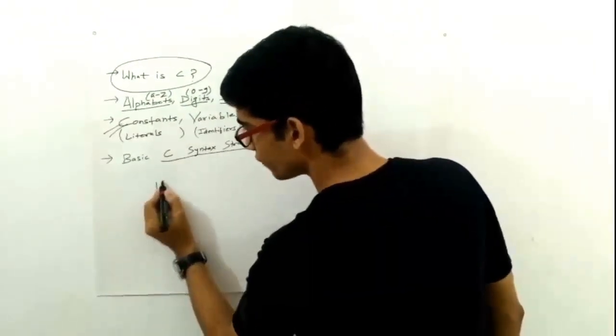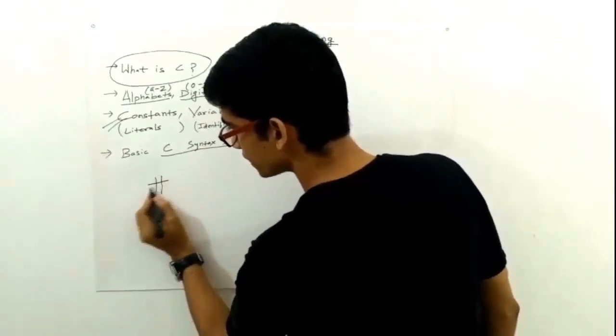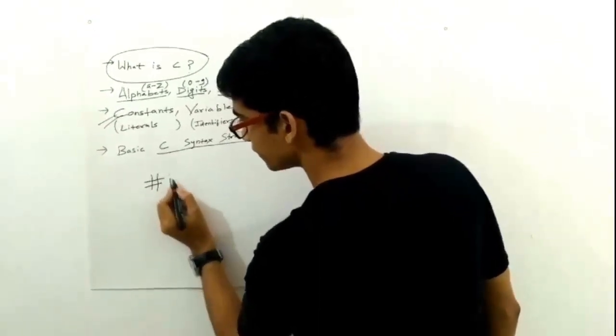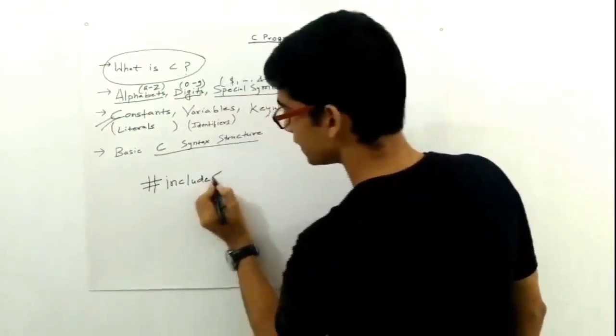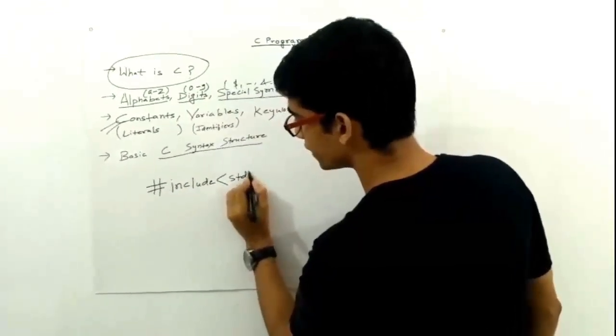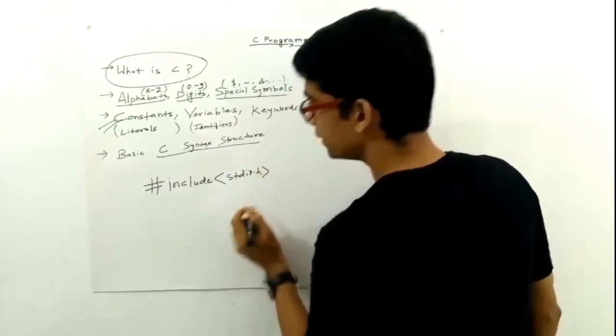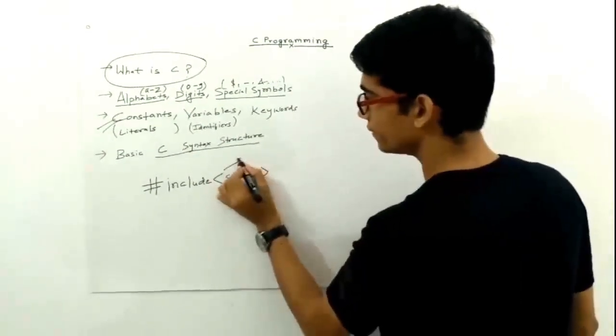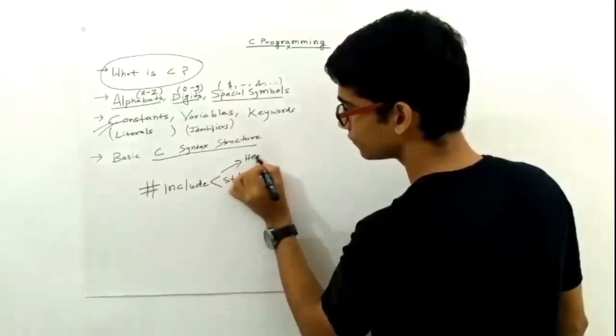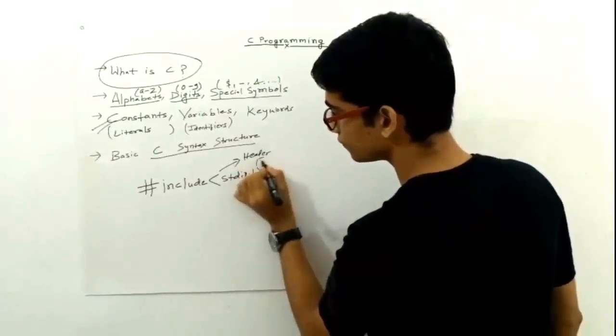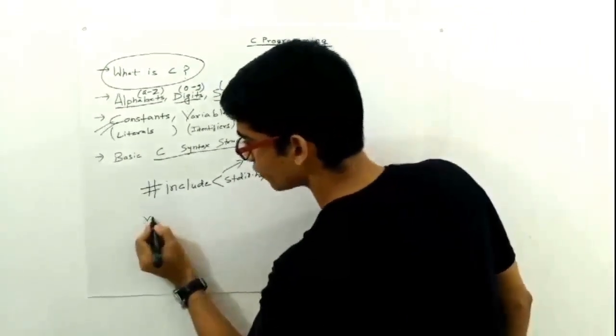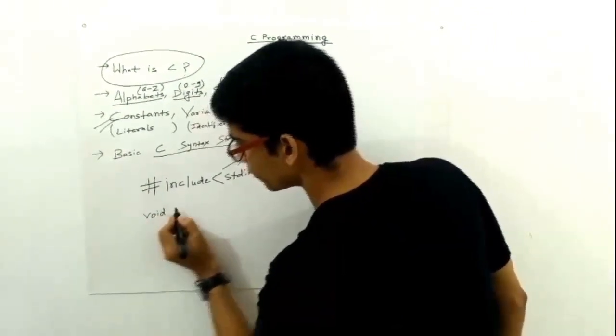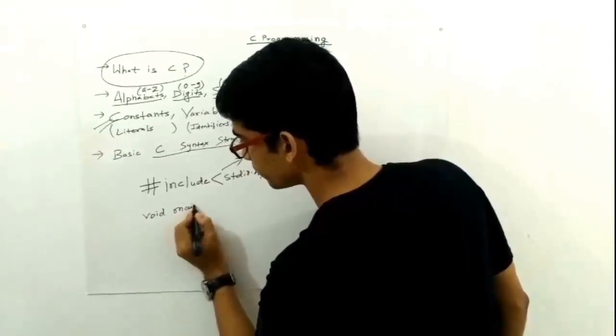The basic syntax structure of C is like this. First, we have to write this line: #include <stdio.h>. This is known as a header file. Then we have a thing known as main function: void main().